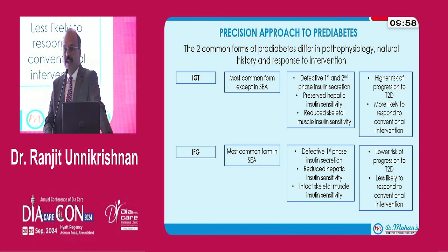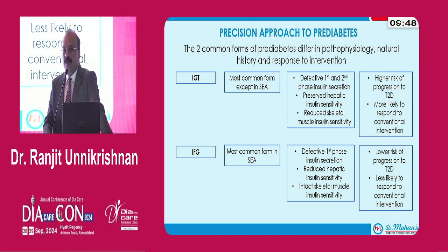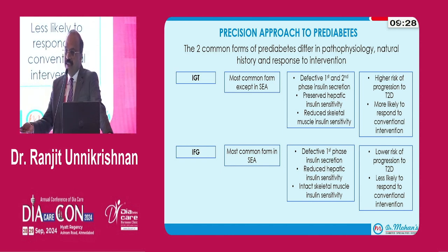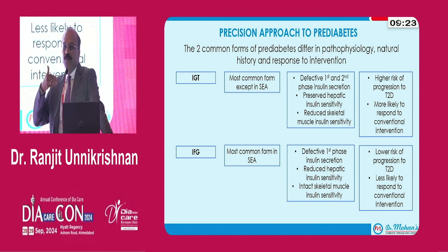There is an increasing trend, especially in western countries, not to do a glucose tolerance test for diagnosing diabetes and pre-diabetes. If you don't do a glucose tolerance test, you cannot diagnose IGT — your only diagnosis is IFG. And really there is no evidence showing that intervening in individuals with IFG has any benefit in preventing progression to diabetes. By all means, lifestyle interventions are useful in improving general health, but we do not have much evidence that it prevents progression to type 2 diabetes.